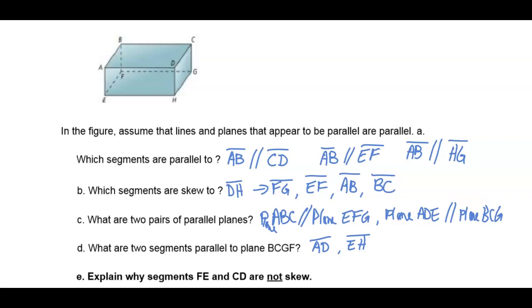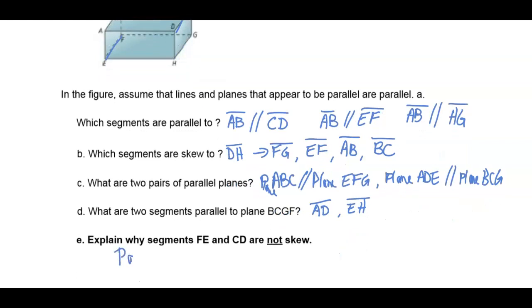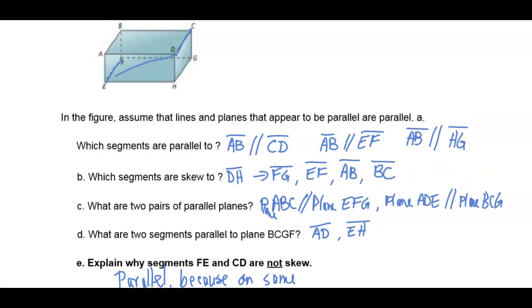Why are segments FE and CD not skew? They are parallel, because they are on the same plane. If you recall, we could slice the figure here, and they would be on a wedge — on the same plane.